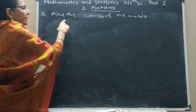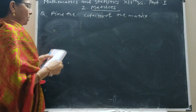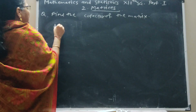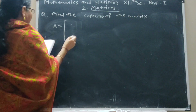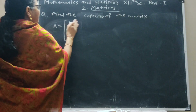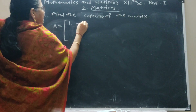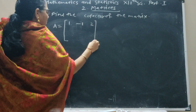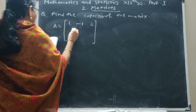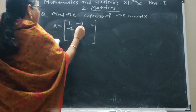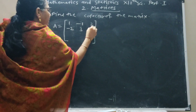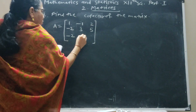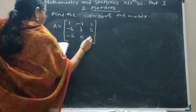Question: the cofactor matrix is equal to the matrix with elements 1, minus 1, 2; minus 2, 3, 5; minus 2, 0, minus 1.